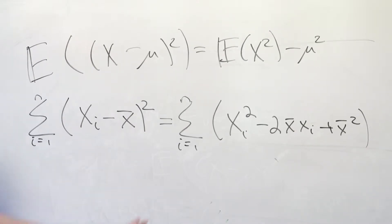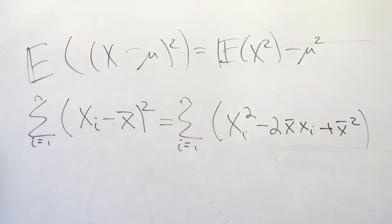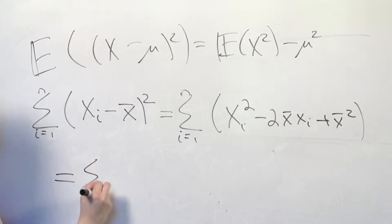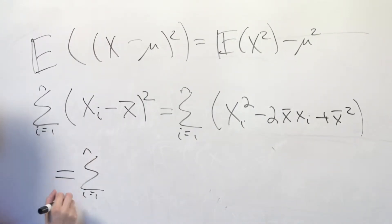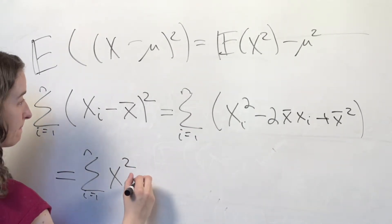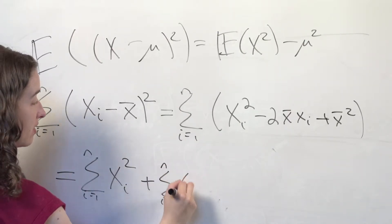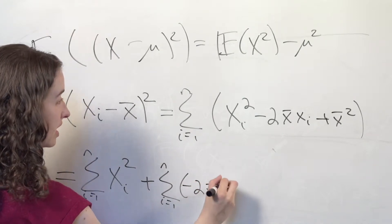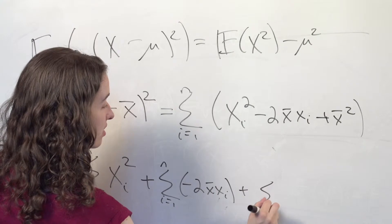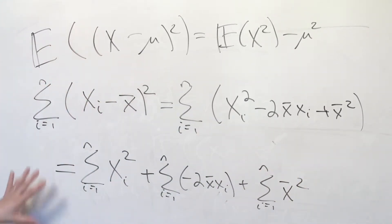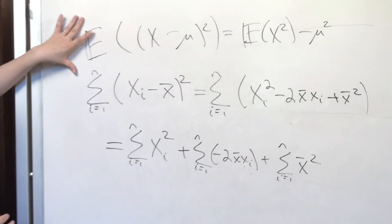Just like I took the expectation operator and applied it to each term in the parentheses, I can do the same thing with the summation sign because the summation of a sum is the same as the sum of summations. So I've got the sum i goes from 1 to n of xi squared plus the sum i goes from 1 to n of the quantity minus 2x bar xi plus the sum i goes from 1 to n of the quantity x bar squared.